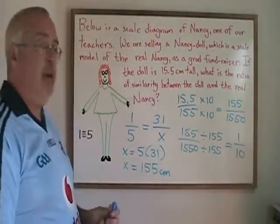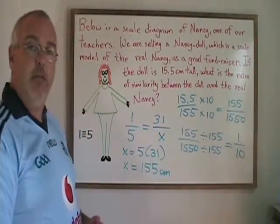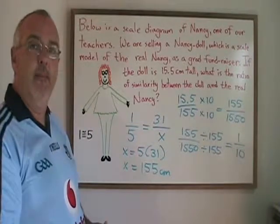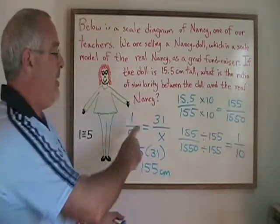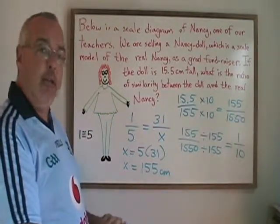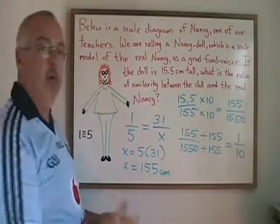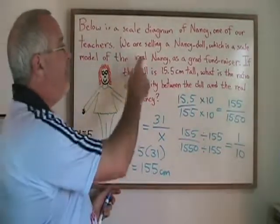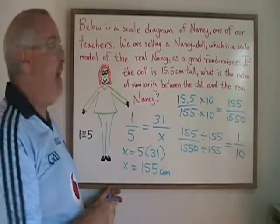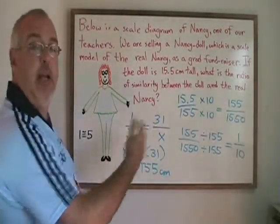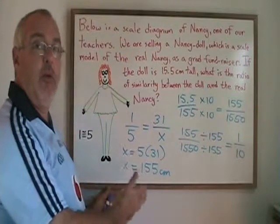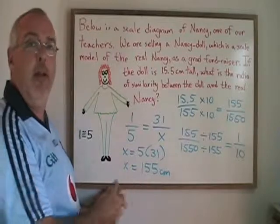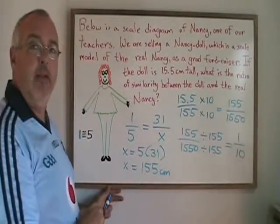I get 1 over 10, which means there is a 1 to 10 ratio of similarity between the doll and the real Nancy. In this case, I only had to do one proportion, and the other step was to build this ratio and simplify it. The important thing is that I'm able to look at the situation and use reading comprehension and an understanding of both ratio and proportion — and the difference between the two — to make this complicated-looking problem a very easy problem mathematically in the end.